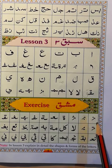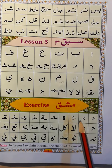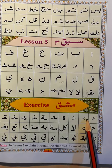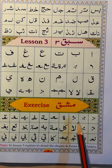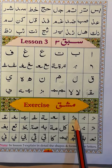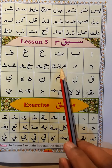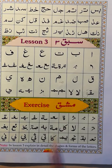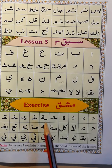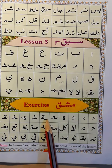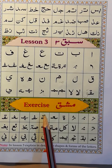So again, in the exercise: noon, ba, sa. How do you know this is noon? Because one dot on the top. Ba — one dot at the bottom. Sa — three dots on the top. This is a ta, this is a ta. We saw the ta shape here. Ta, ayn, ta, ta. This is ha when there are no dots. But when there are two dots, this is ta.